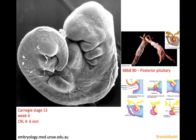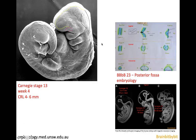Rathke's cleft cysts are congenital, so I'm going to repeat a little bit of the embryology that I already talked about in the Brain Bit by Bit on the posterior pituitary, starting very early in embryology. In week 4, Carnegie stage 12 and 13, there's the formation and beginning of Rathke's pouch, whereas the pontine flexure appears in week 5. The events in the embryology of the posterior fossa happen in weeks 6, 7, and 8, and the perforation of Blake's pouch cyst occurs in weeks 9 and 10. So the formation of Rathke's pouch is very early in embryology.